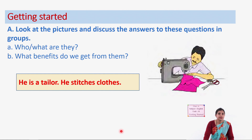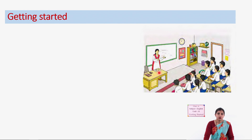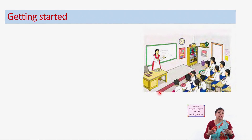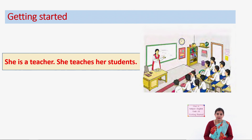So he is a tailor — what does he do? He stitches clothes. The next picture shows a woman standing in the front with many students around her. She is teaching. You can see there is a board and she is explaining something, just as I am doing for you now. What do we call those who teach students? She is a teacher, and what does she do? She teaches her students.